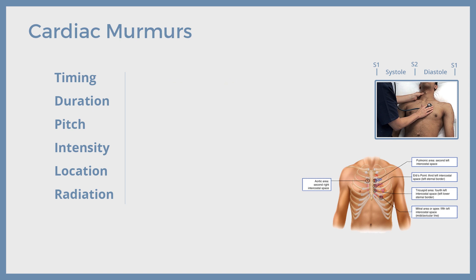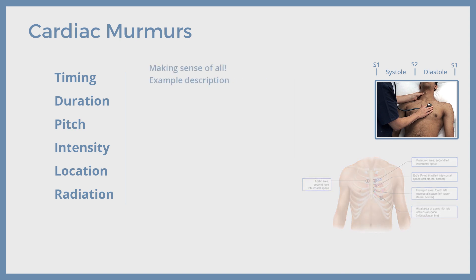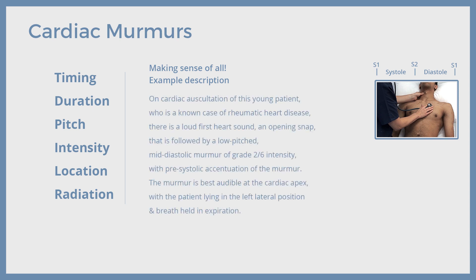With this, we have concluded all the murmur features. Let's combine all features now to describe a murmur — for example, mitral stenosis murmur — to make sense of what we have described. This is how a murmur is described in practice as well. On cardiac auscultation of this young patient, who is a known case of rheumatic heart disease, there is a loud first heart sound, an opening snap, that is followed by a low-pitched, mid-diastolic murmur of grade 2 by 6 intensity, with presystolic accentuation of the murmur. The murmur is best audible at the cardiac apex, with the patient lying in the left lateral position and breath held in expiration.